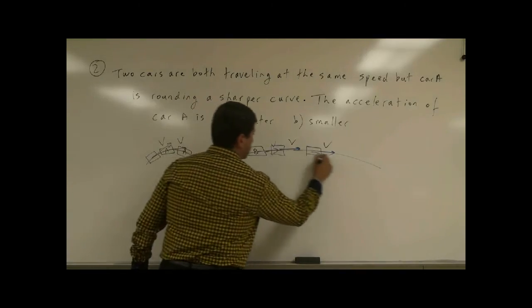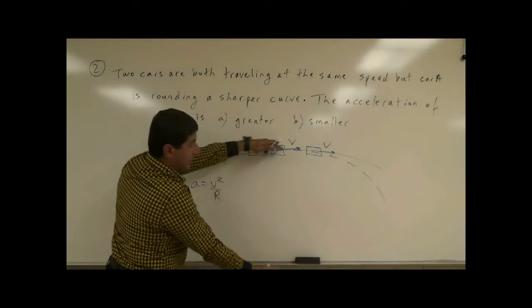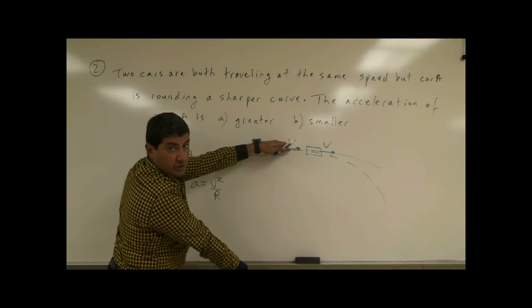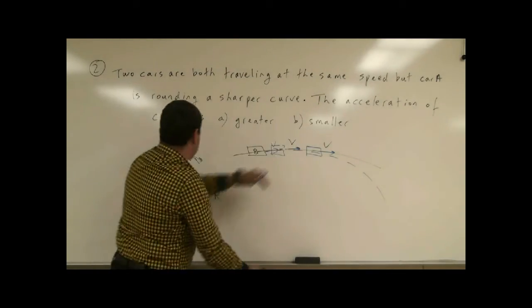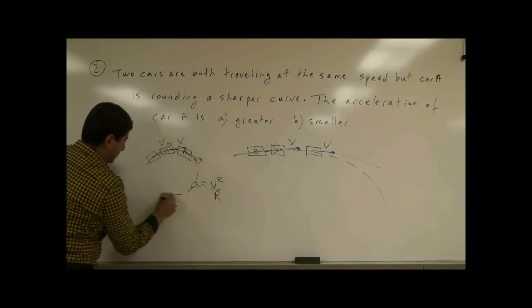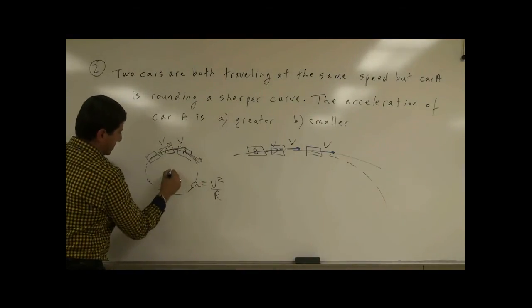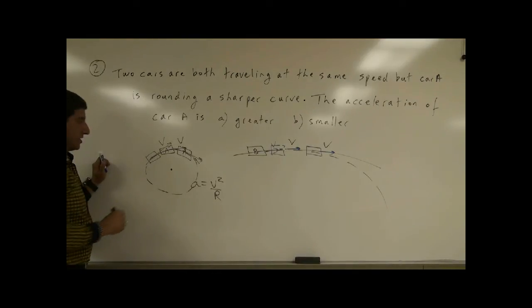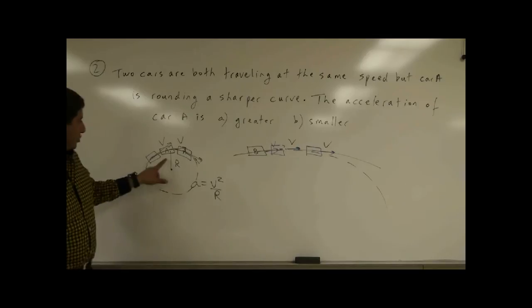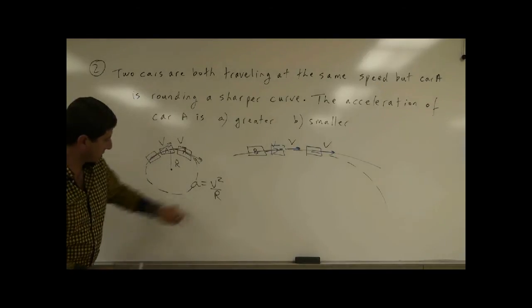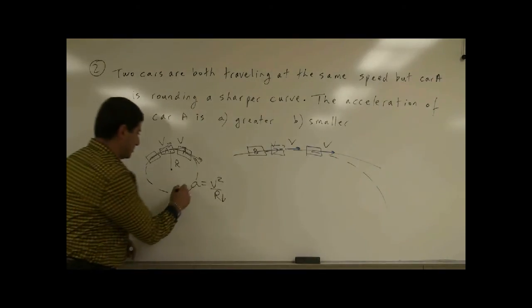This one's radius of curvature is a bigger radius. If you would draw a circle like this, the radius of curvature is much larger. A gentle curve has a bigger radius of curvature. This one, it's making a circle like this. The center of the circle is somewhere there. The radius of curvature is much smaller. So if the radius of curvature here is smaller, it makes the acceleration bigger.